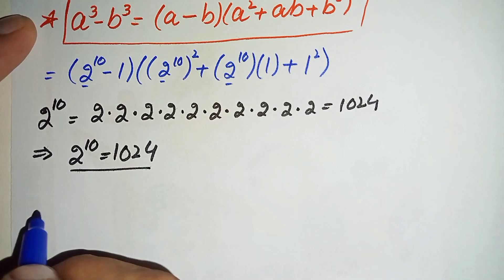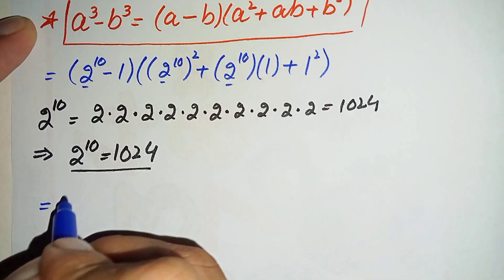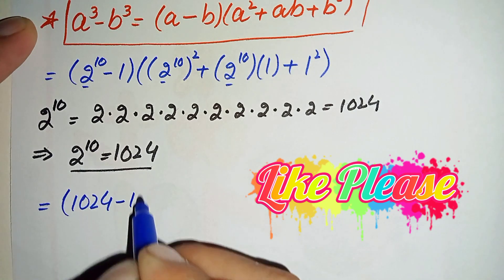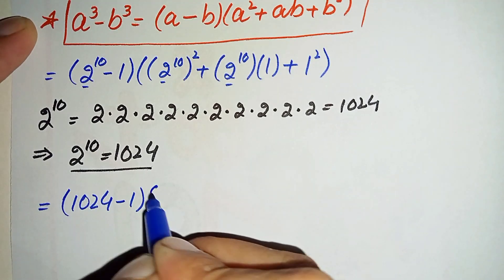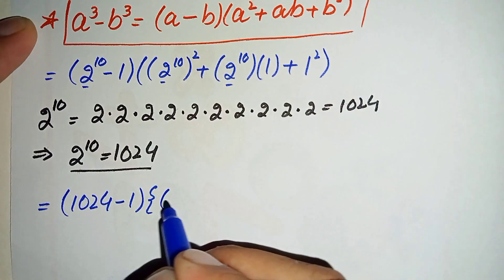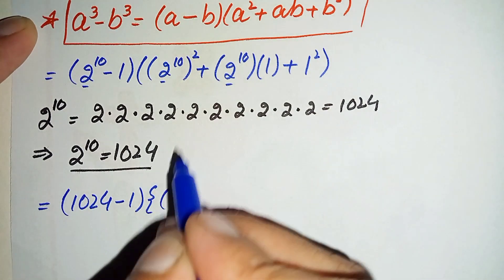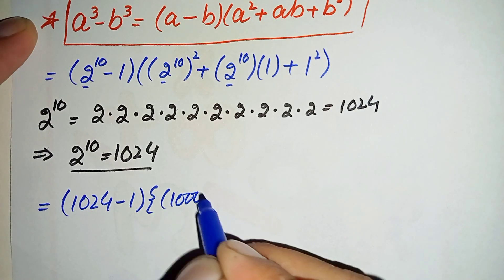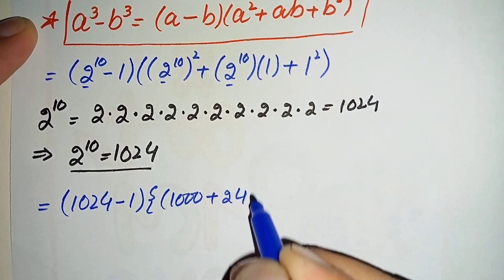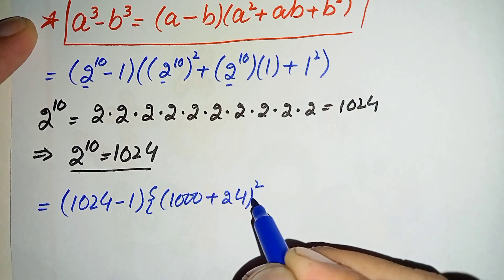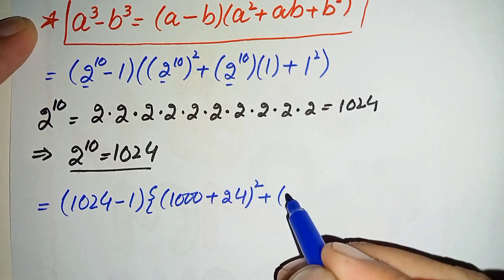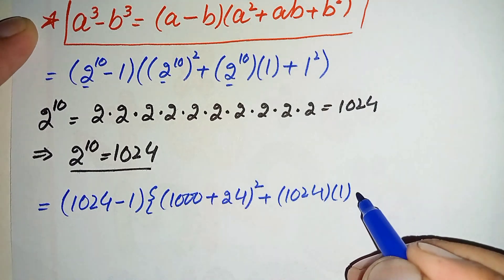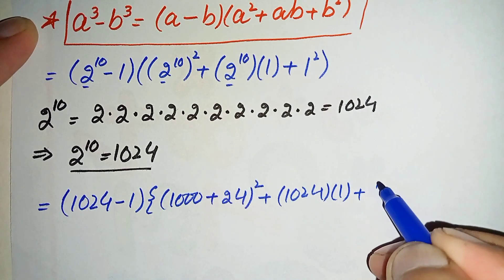Now we will replace 2 raised to power 10 with 1024 in our equation. This becomes: (1024 minus 1) times (1024 squared plus 1024 times 1 plus 1 squared). And 1 squared is simply 1.